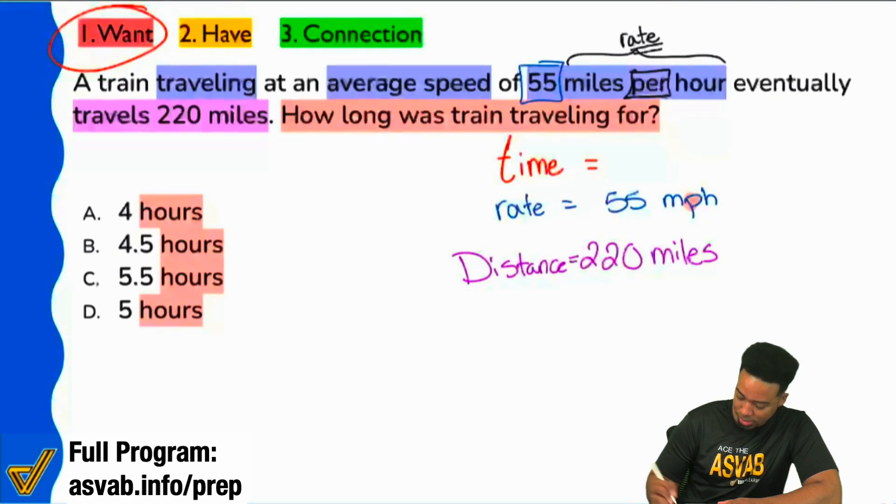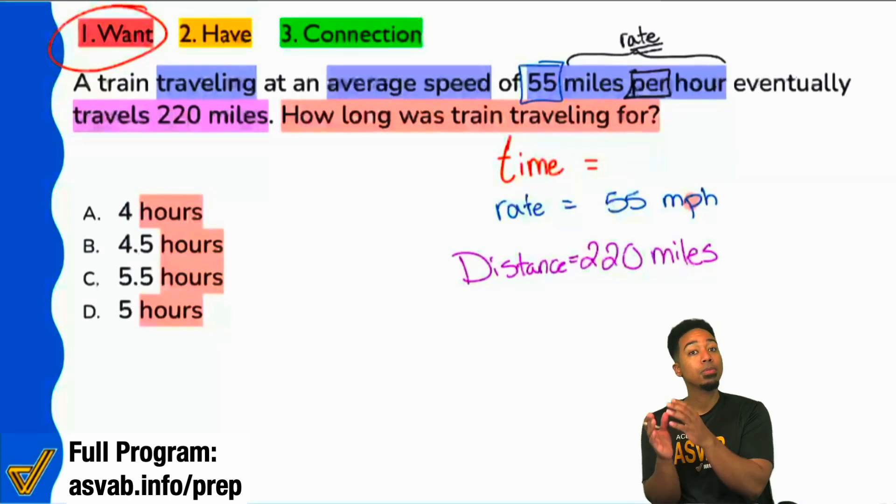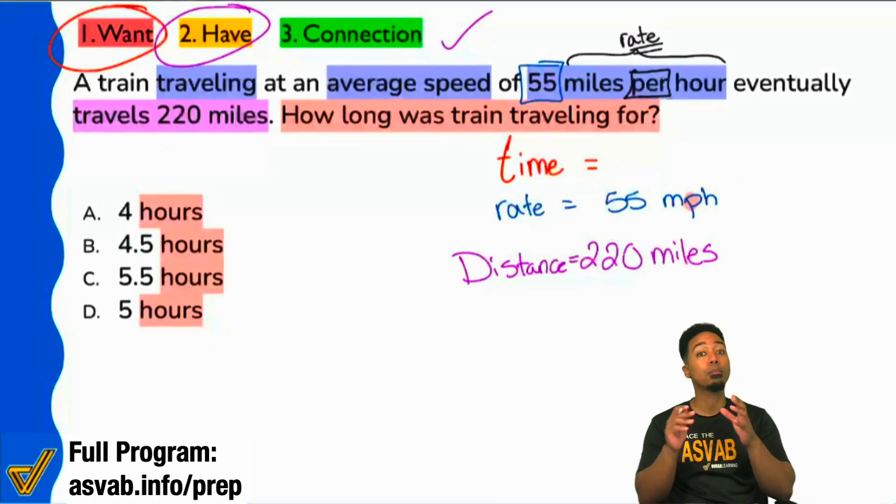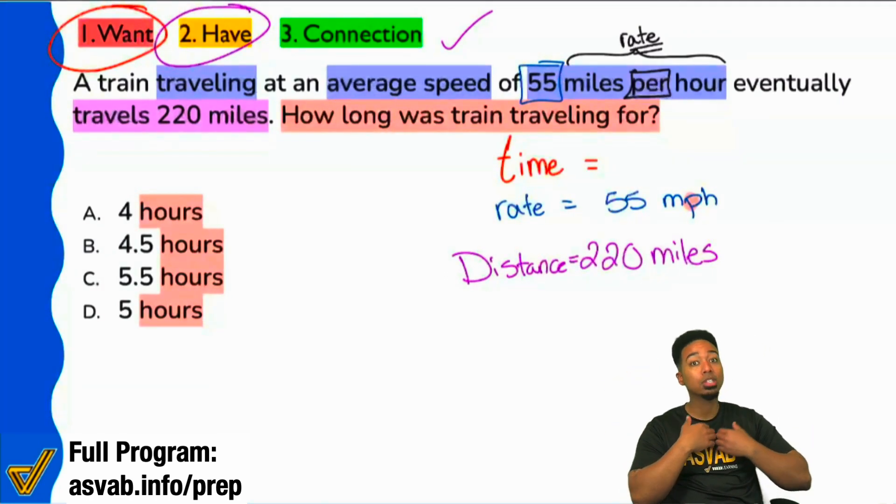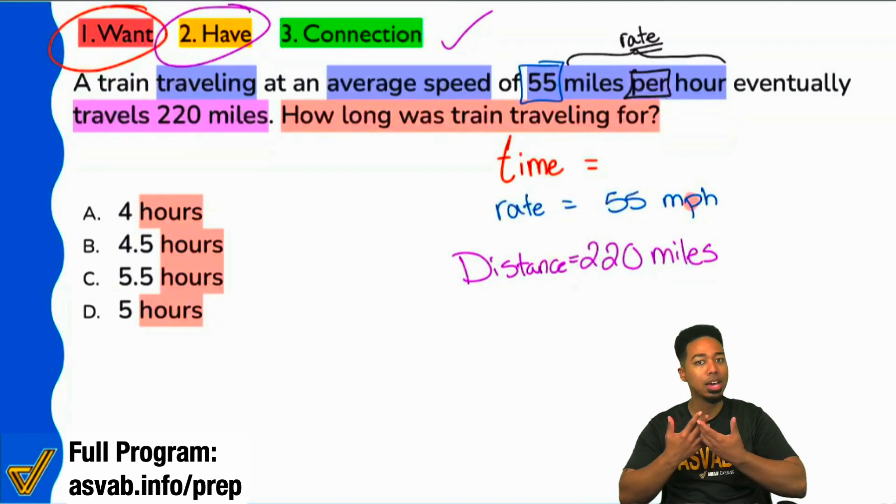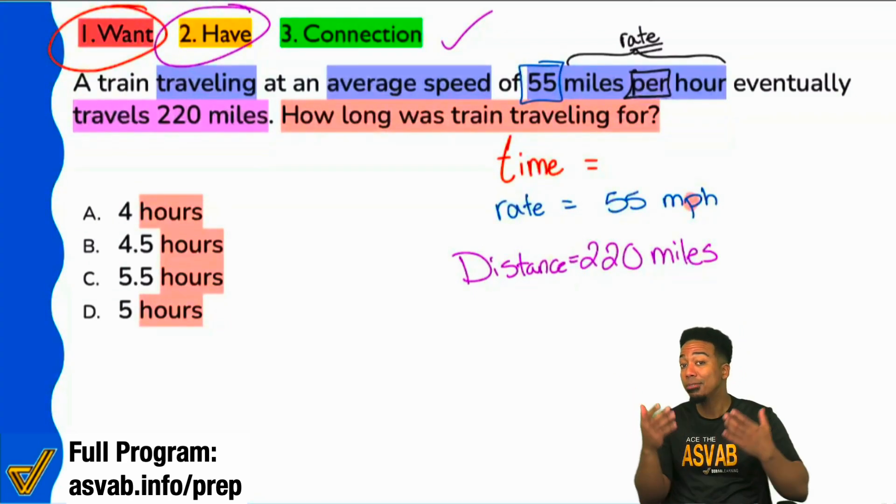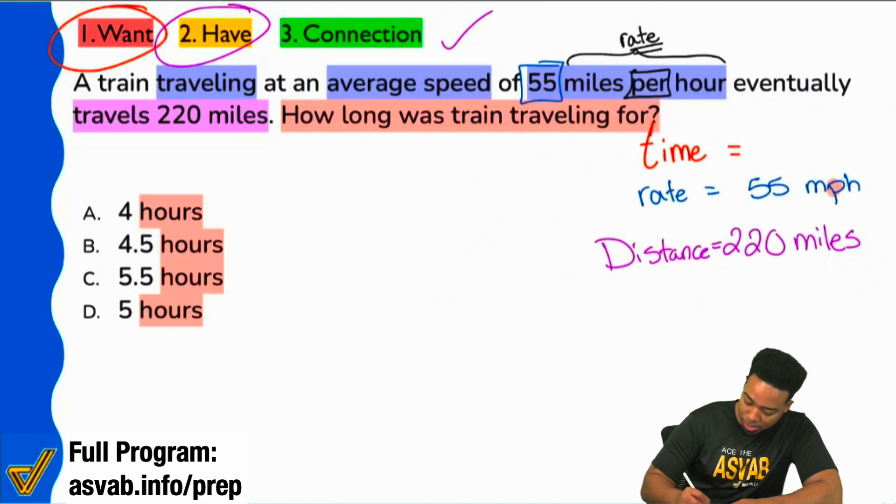My party people, this is where knowing what the information means, that's where step three kicks in, where we're now trying to build a connection. The information we have is going to be connected with the knowledge we have to get to the answer we're looking for. The formula is distance equals rate times time. Feel free to write it down.